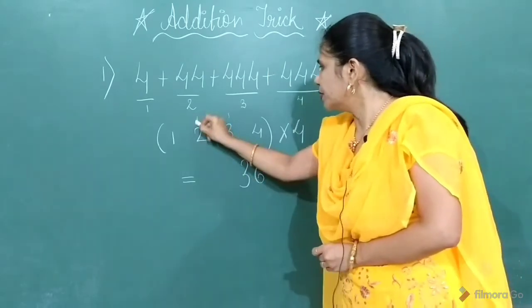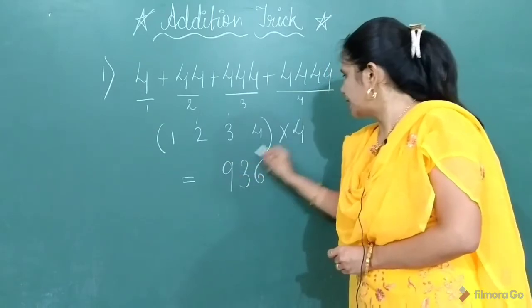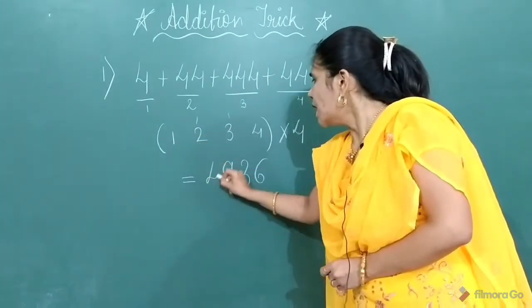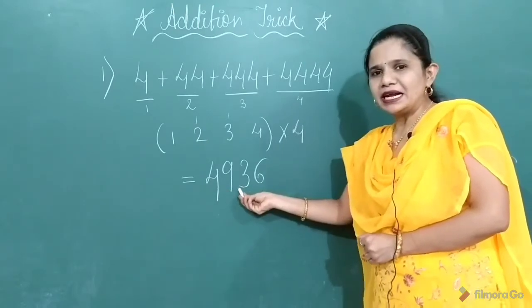So 3, 1 you will carry to the next group. 4 twos are 8 plus 1, 9. And 4 ones are 4. So what will be your answer? 4,936.